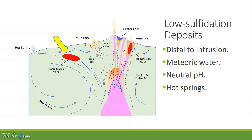Precipitation occurs episodically at around 200 to 300 degrees Celsius and results in open space-filled textures such as crustiform, coliform, cockade, or bladed veins and gold-bearing breccias. In areas of active volcanism and geothermal activity, low sulfidation deposits are forming beneath hot springs.